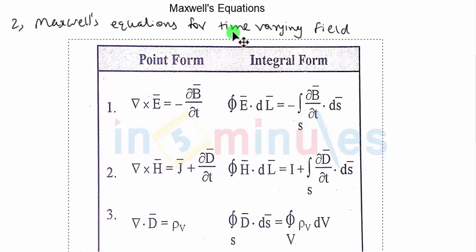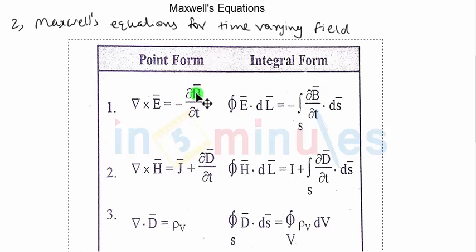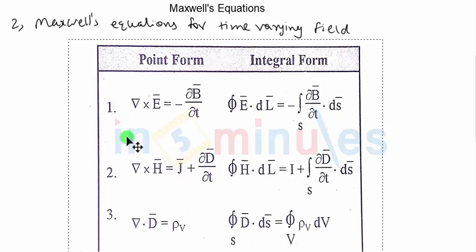The next set of Maxwell's equations will be discussed for time-varying fields. Like in the previous case, we have four equations in point form and four equations in integral form. Maxwell's first equation states that del cross E-bar is equal to minus partial derivative of B-bar with respect to time. This equation is derived from Faraday's law with the help of Stokes' theorem. That's Maxwell's first equation in point form for time-varying fields.